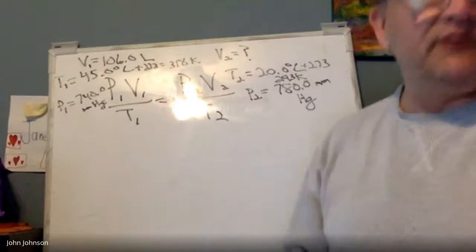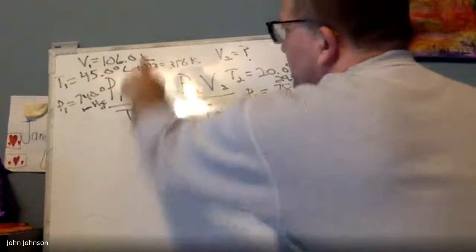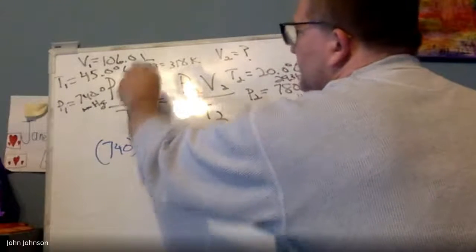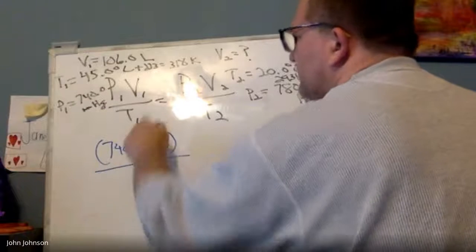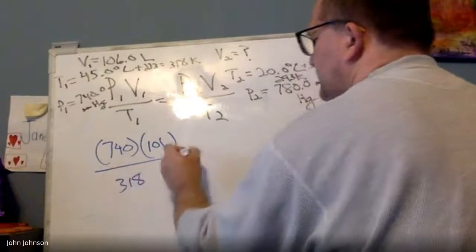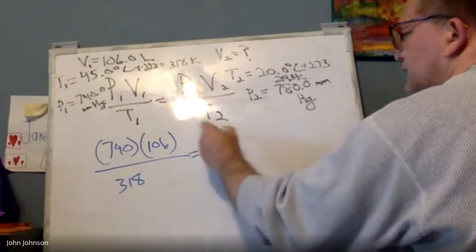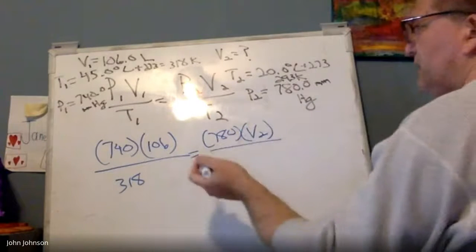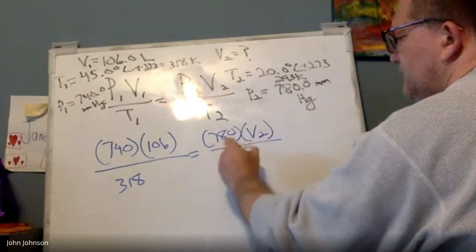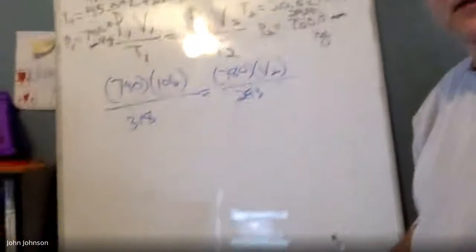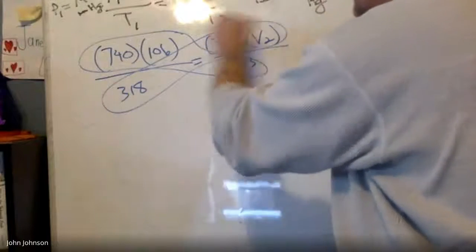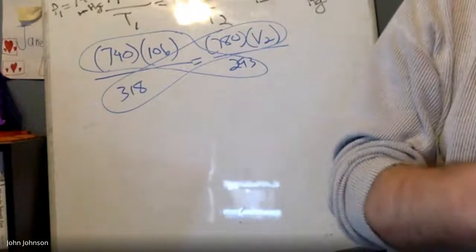So we have everything except one, and once we get ourselves to one variable now we can solve. I'm going to substitute. So my P1 is 740, my V1 is 106, and I'm dividing it by my T1 in Kelvin, 318. And that's going to equal P2, 780, times V2, which is what we're solving for, and then for T2, 293. And then from here we're just going to cross multiply.